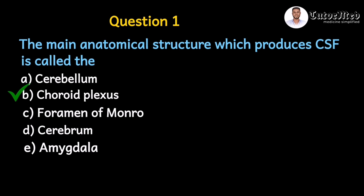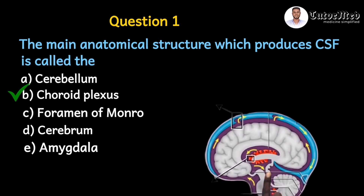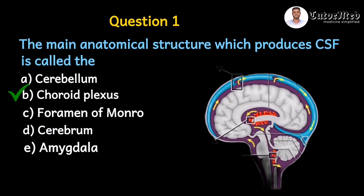Here is a picture of the sagittal section of the brain, the brain stem, and the upper part of the spinal cord. Option A, the cerebellum, is a structure located behind the brain stem. This part of the brain is responsible for coordination, equilibrium, and balance — it does not produce CSF.